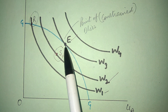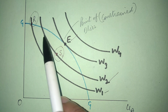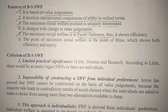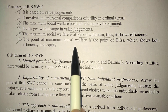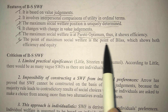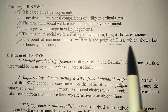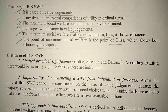It changes with changes in value judgment. The point 'J' is the optimum point because it is above the blue line, which is why it explains both efficiency and equity. The point of maximum social welfare is the point of bliss — it is also called the point of bliss — which means it shows maximum happiness and shows both efficiency and equity.